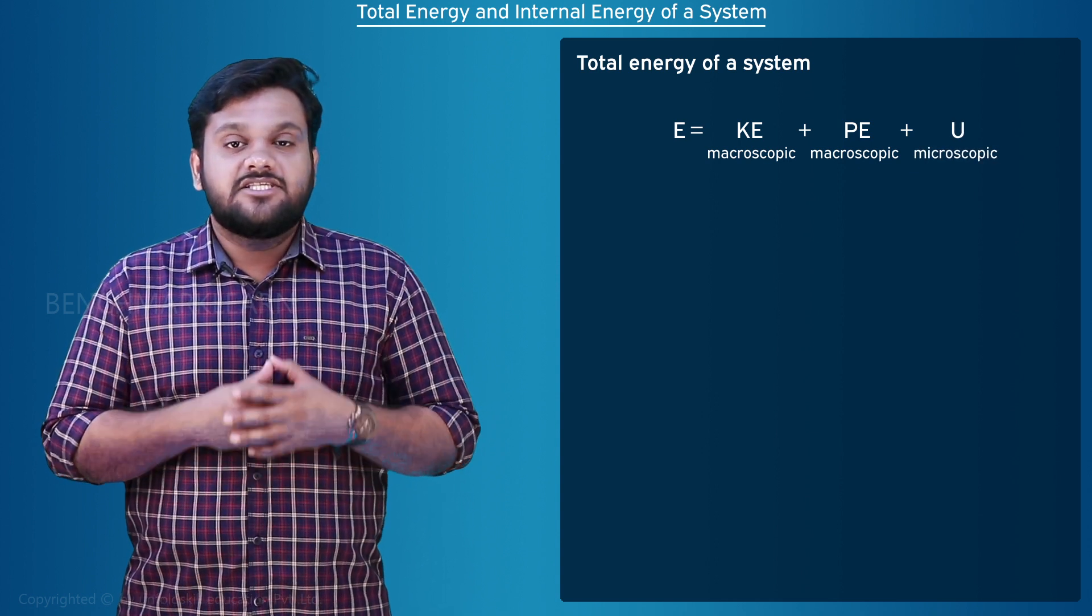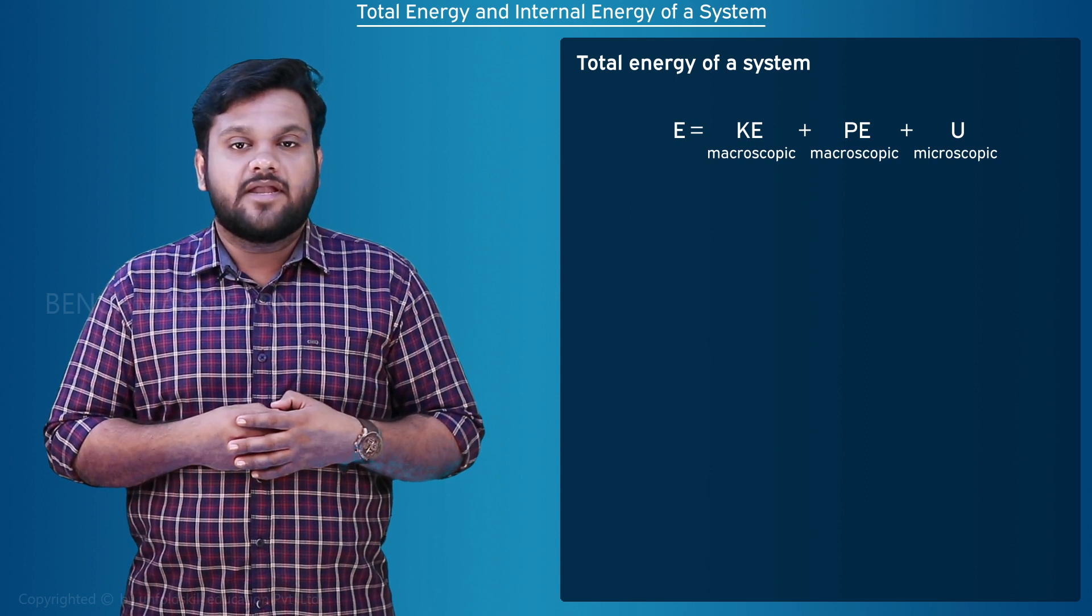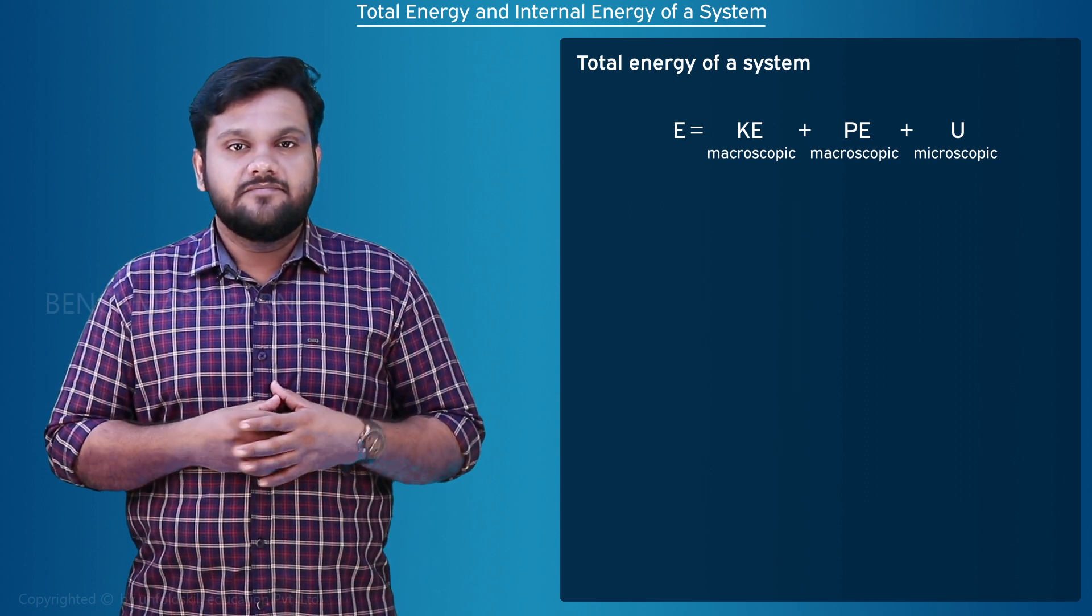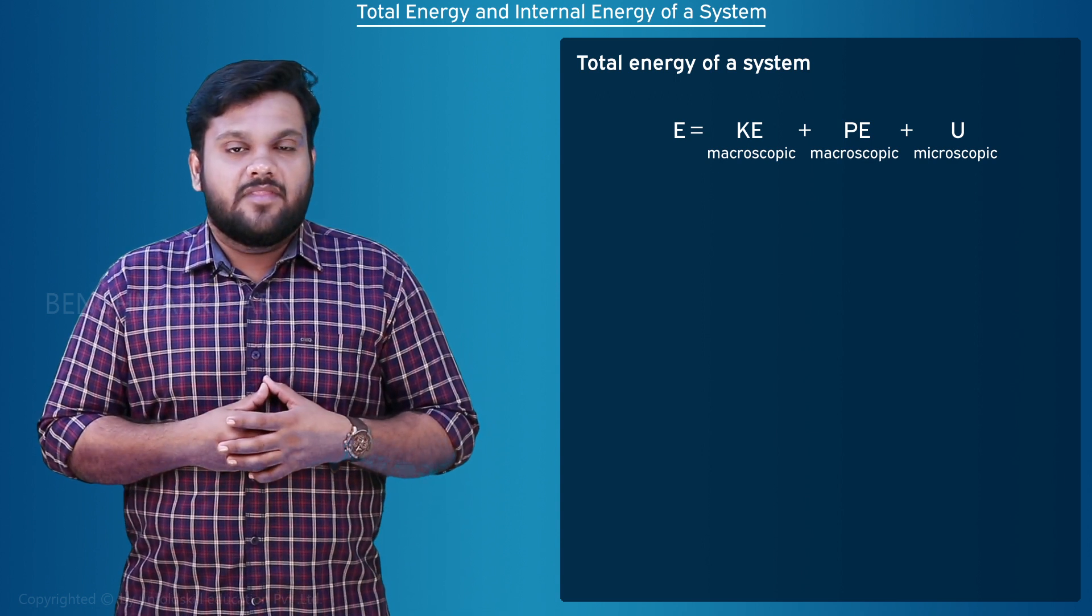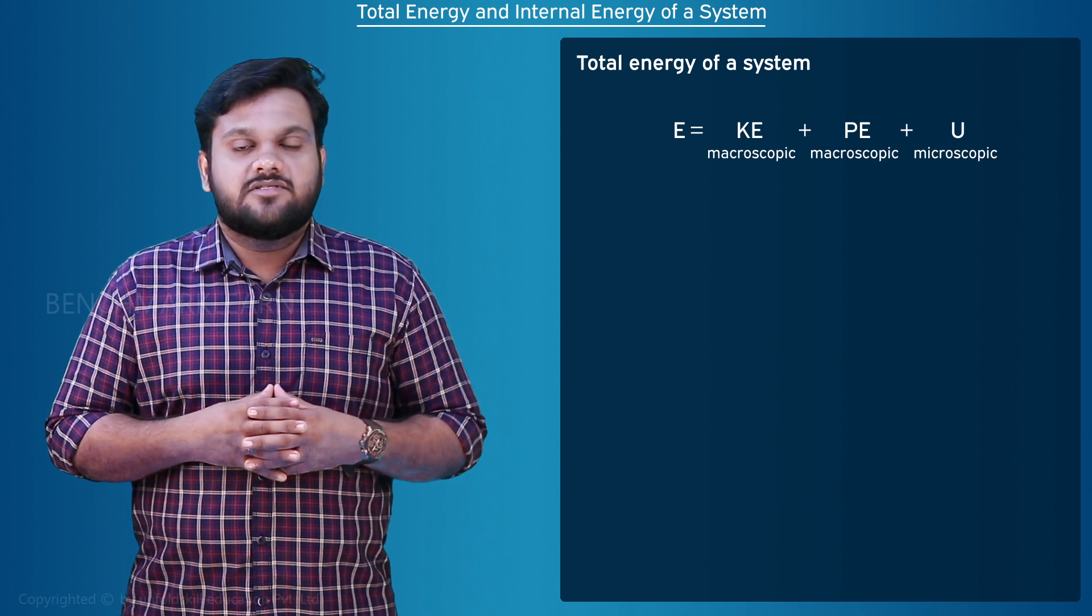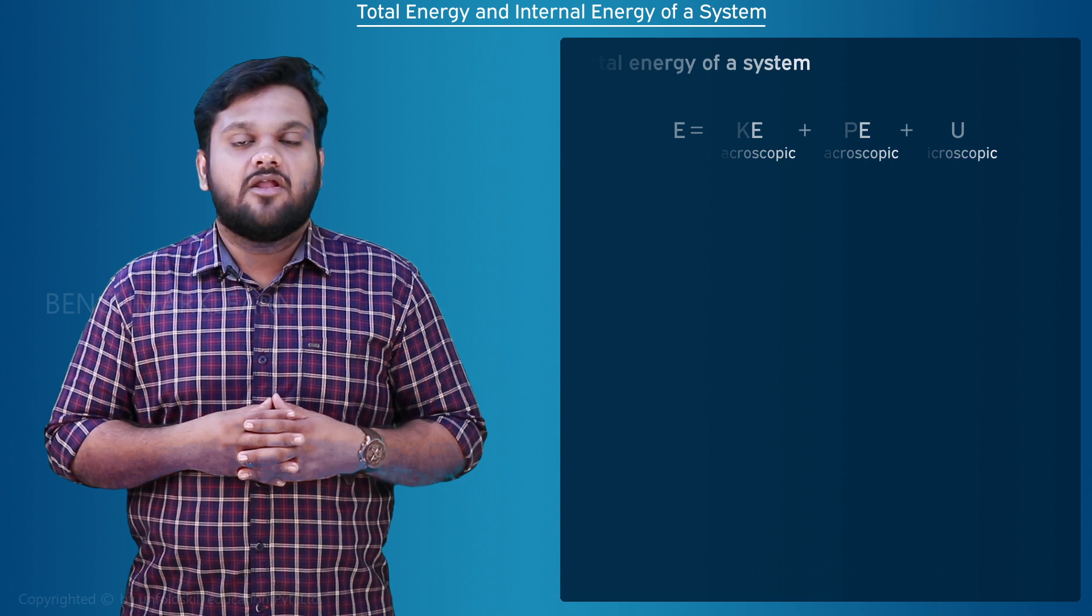The internal energy is denoted by capital U and it is a microscopic property of the system. It is a measure of the energy stored at the molecular level. The internal energy includes kinetic energy and potential energy at molecular level of the system.